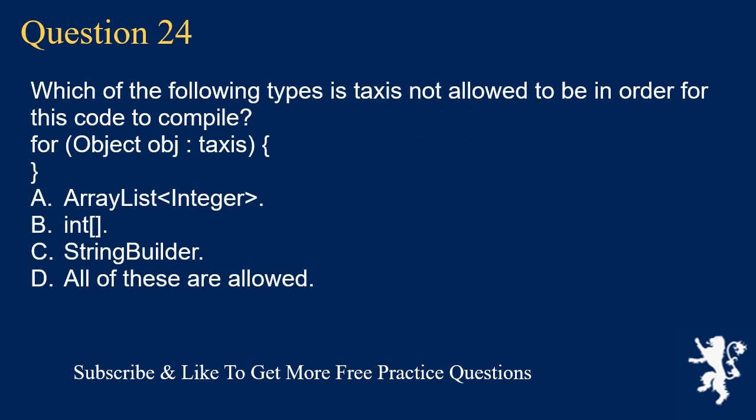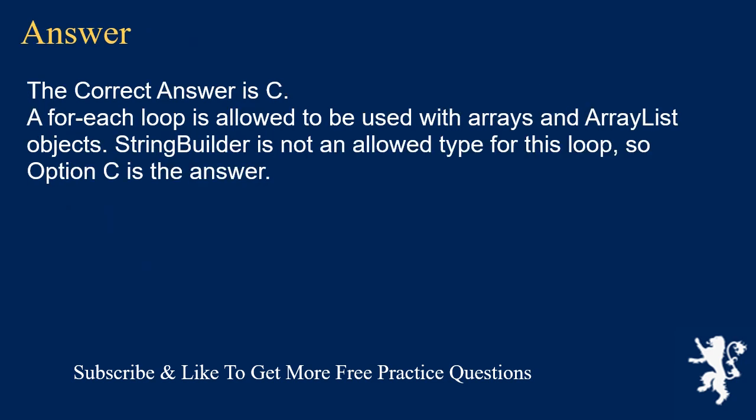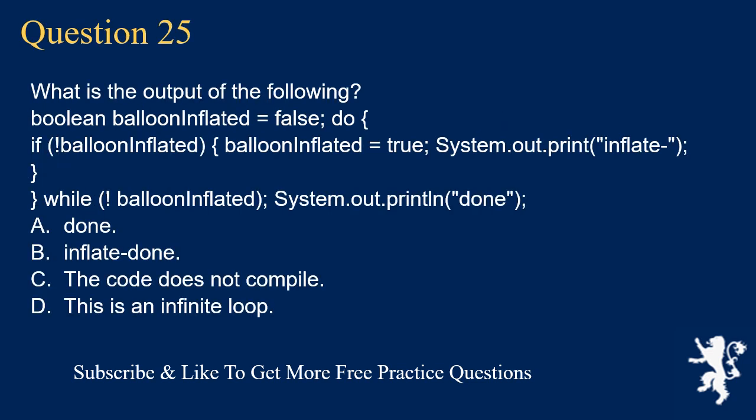Question 24. Which of the following types is taxis not allowed to be in order for this code to compile? for (Object obj : taxis). A. ArrayList<Integer>. B. int. C. StringBuilder. D. All of these are allowed. The correct answer is C. A for-each loop is allowed to be used with arrays and ArrayList objects. StringBuilder is not an allowed type for this loop, so option C is the answer.